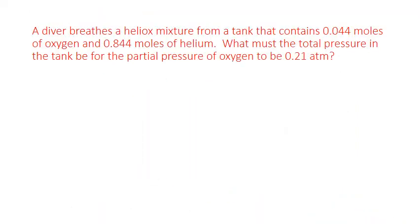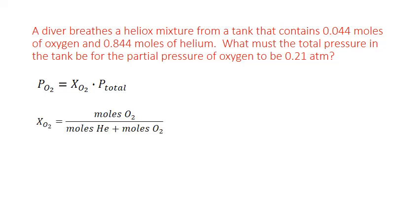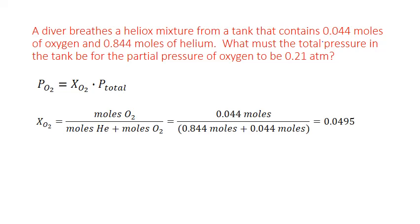Let's look at an example application of this variation on Dalton's Law. A diver breathes a heliox mixture from a tank that contains 0.044 moles of oxygen and 0.844 moles of helium. What must the total pressure in the tank be for the partial pressure of oxygen to be 0.21 atmospheres? We can calculate the mole fraction of oxygen as the moles of oxygen divided by the total moles of gas in the tank. Substituting in the moles of oxygen and helium, we get a mole fraction of 0.0495.